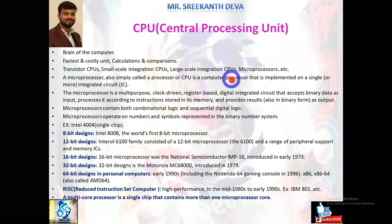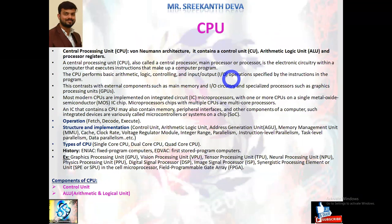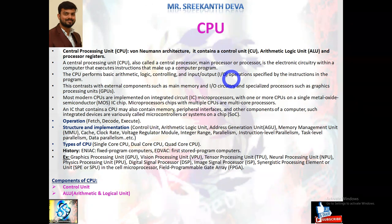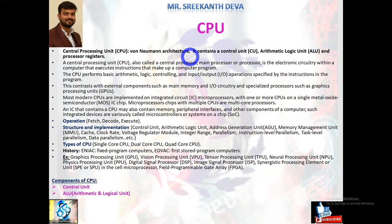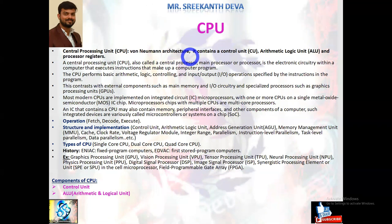The CPU consists of several components, and the major points required for computer fundamentals are highlighted here. Currently we use von Neumann architecture. In previous sessions I explained von Neumann architecture and modified Harvard architecture — their functionalities, characteristics, advantages, disadvantages, and use cases in detail. The CPU generally consists of a control unit, arithmetic logical unit, and processor registers.